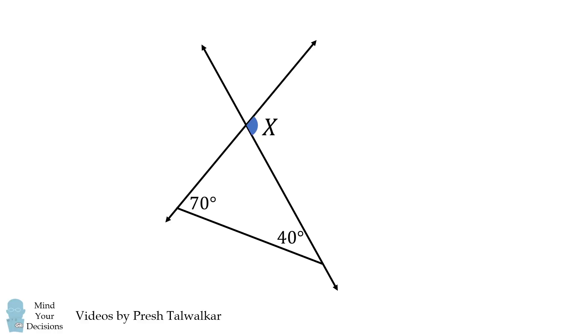Another way of seeing this is that the remaining angle in the triangle is equal to 70 degrees, to get a total sum of 180 degrees, and then x is equal to 180 degrees minus 70 degrees, which is equal to 110 degrees, and that's our answer.